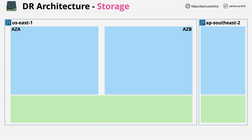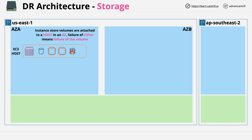Let's start with instance store volumes. Instance store volumes are attached to a specific EC2 host, which can also run EC2 instances. Instance store volumes are one of the most high-risk forms of storage available within AWS — they have no resilience to failure of any kind. If a physical storage device fails, data is going to be lost. And because they're attached to a host which runs in an availability zone, if the host fails or the availability zone fails, the instance store volumes and EC2 instances running on that host will also fail.